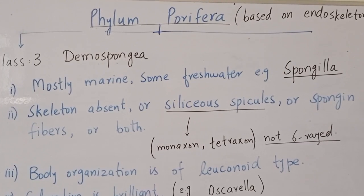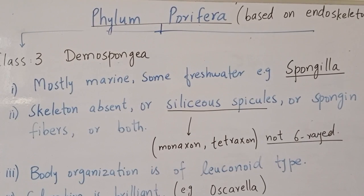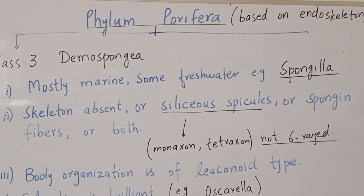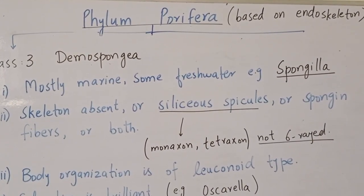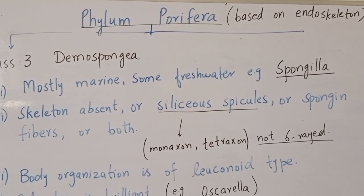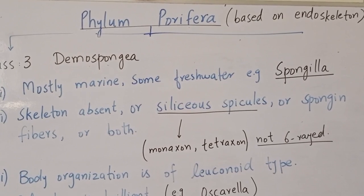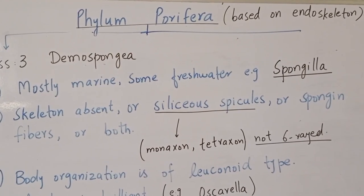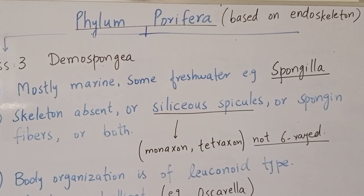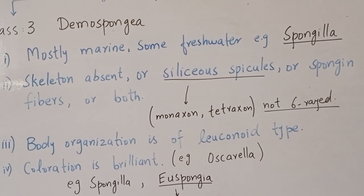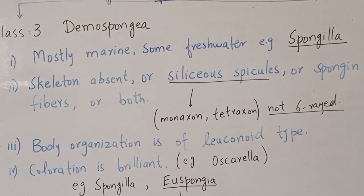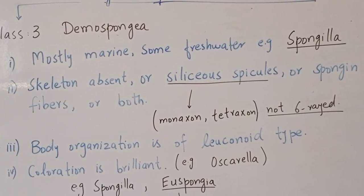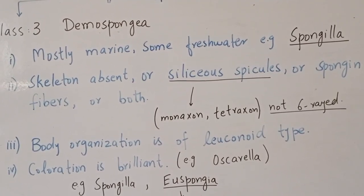Both Hyalospongia and some members of Demospongia have siliceous spicules. The difference is that in Hyalospongia the spicules always have six rays, whereas in Demospongia the spicules are either monoaxon (one ray) or tetraxon (four rays). Regarding body organization, Demospongia have the leucon type of canal system, and their coloration is brilliant.